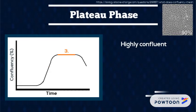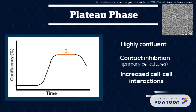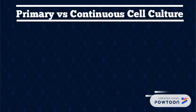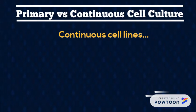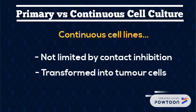As space on the cell culture dish becomes limited, cells enter the plateau phase. Contact inhibition causes changes in gene expression and increased cell-to-cell interaction. Primary cells exhibit contact inhibition and become arrested in G0/G1, stopping division — more closely representative of certain cell types in vivo. In contrast, continuous cell cultures are not limited in growth by contact inhibition because they are transformed into tumor cells.